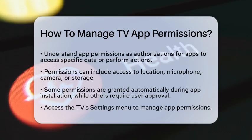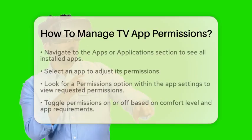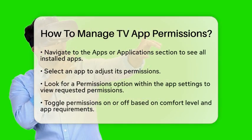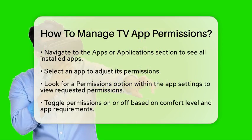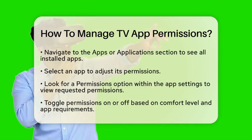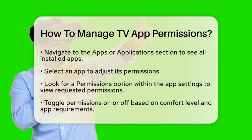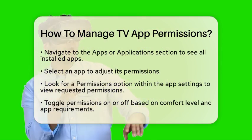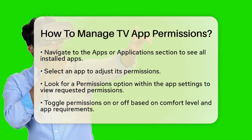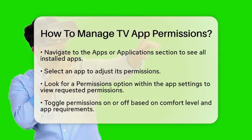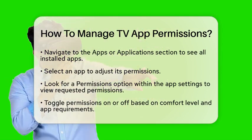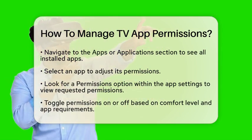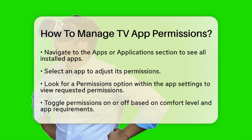To manage TV app permissions, start by accessing your TV's settings menu. Look for the section labeled Apps or Applications. Here, you will find a list of all the apps installed on your device. Select the app whose permissions you want to adjust.